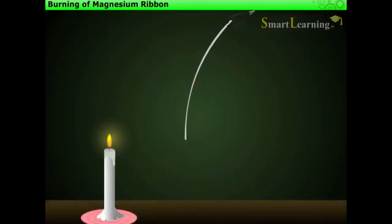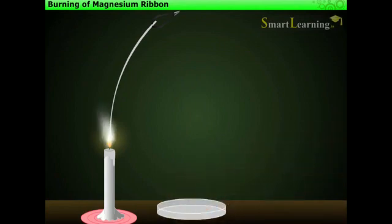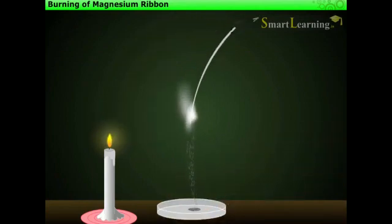Now light a candle and bring the tip of ribbon near the flame. We observe that it burns with a bright white light.